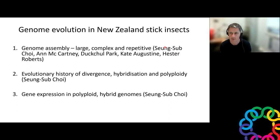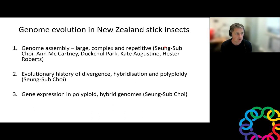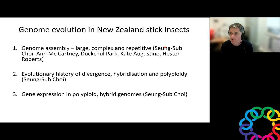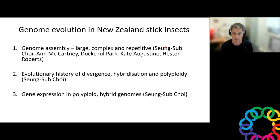I'm going to cover three areas when I talk about stick insects. A lot of the work I'll present today came out of the thesis of Shane Sub Choi, who finished his thesis last year. He's done genome assembly on the stick insects — it's a large, complex, and highly repetitive genome, so it's been quite challenging. That work was supported by Anne McCartney, a GA postdoc at Landcare a couple of years ago, and Duckshaw Park, Kate Augustine, and Hester Roberts from Landcare helped with lab work. I'll also talk about hybridization, polyploid evolution, and gene expression in these polyploid and hybrid genomes.